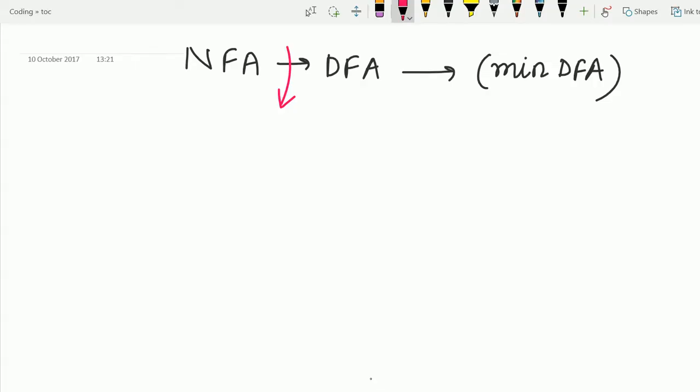So friends, welcome to Rapid Revision for Computer Science students. In this lecture, we are going to study the conversion of NFA to DFA. And after that, we are going to understand the two most important concepts in theory of computation.